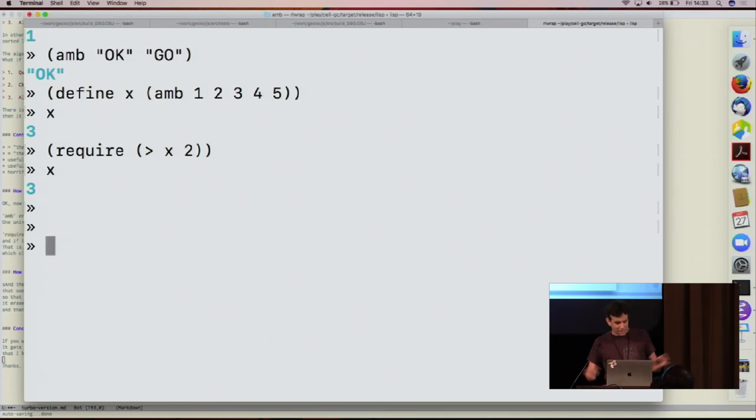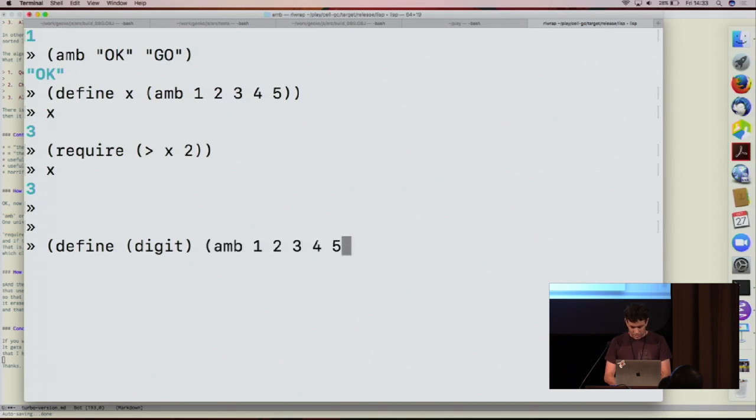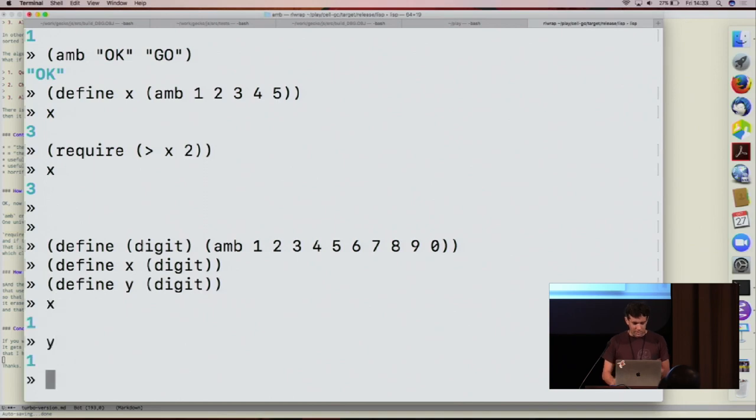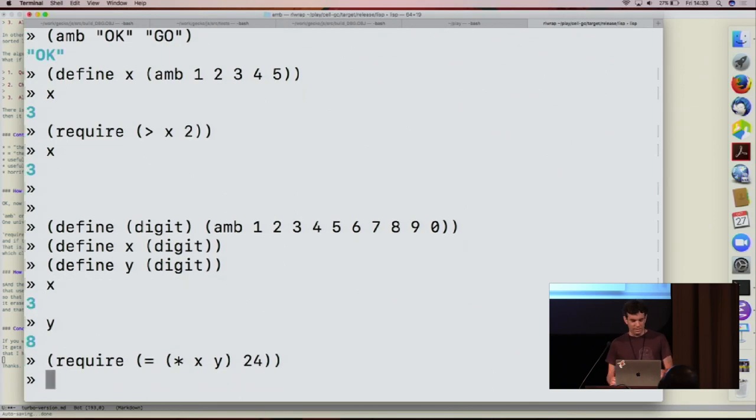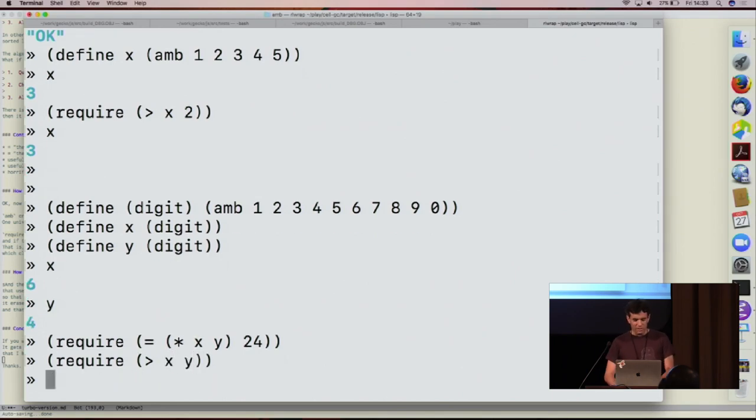I'll do one more example just to make sure everybody's got this concept. If I define a function called digit, you call it with no arguments and it returns a digit, which is like this. Then I could say, make X a digit and make Y be a digit and then we've got these two numbers. And then if I require that the product of X and Y be equal to like 24 then that happens. And then if I require X to be greater than Y then that happens. You get the idea.